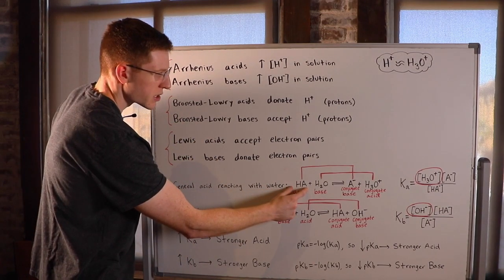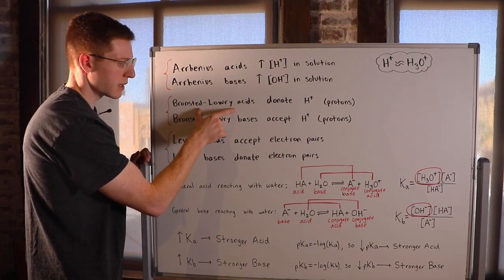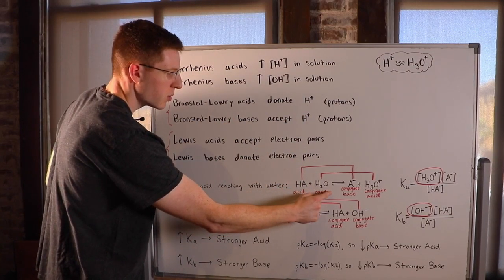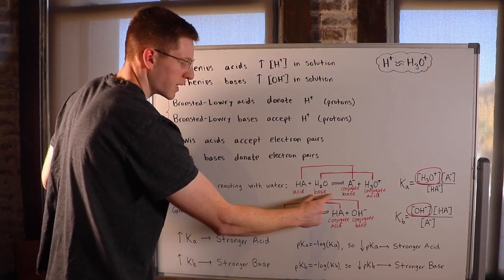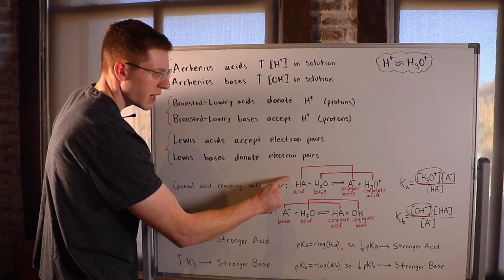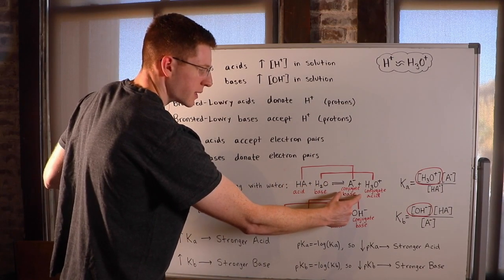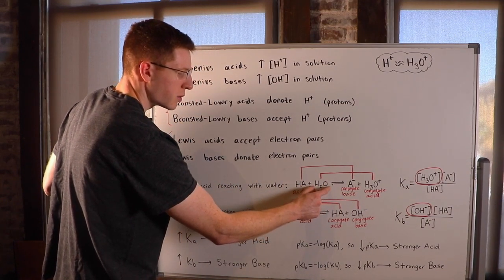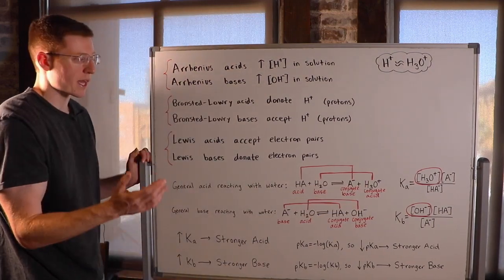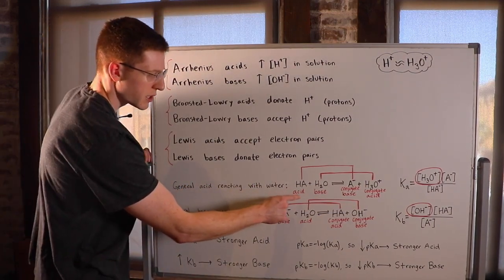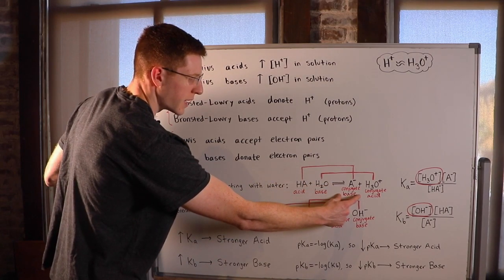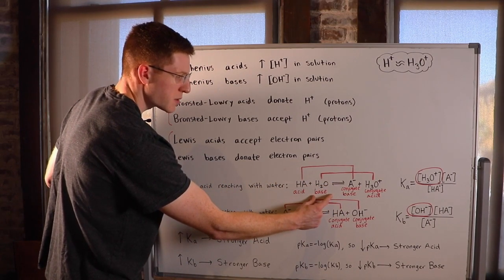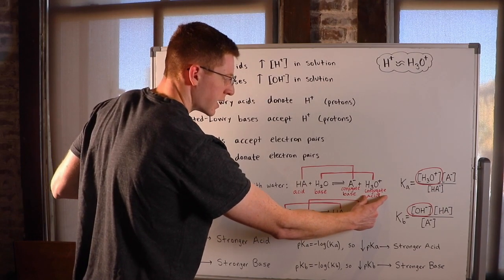HA is going to donate its proton because it is a Bronsted-Lowry acid, while H2O is going to accept a proton because it is a Bronsted-Lowry base. You can see HA has donated its proton to become A-, while H2O has accepted a proton to become H3O+. Notice here, when an acid donates its proton, it becomes a conjugate base. When a base accepts a proton, it becomes a conjugate acid.